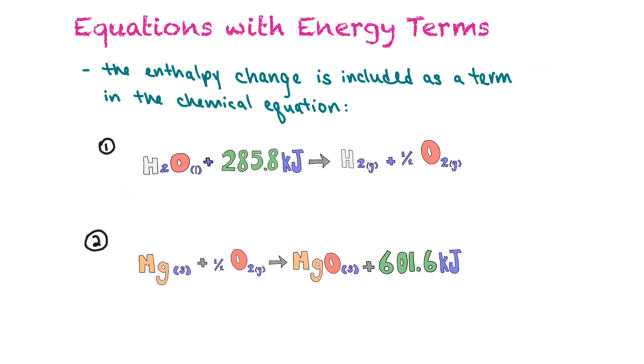First of all, we can record the energy term within the chemical equation itself. In the first example here, we have water plus 285.8 kilojoules produces hydrogen gas and one-half of a molecule of oxygen. This example would be an endothermic reaction because it's absorbing energy to allow the reaction to happen.